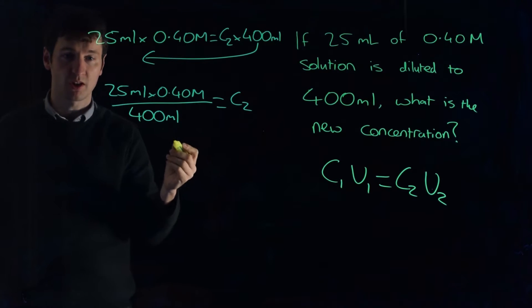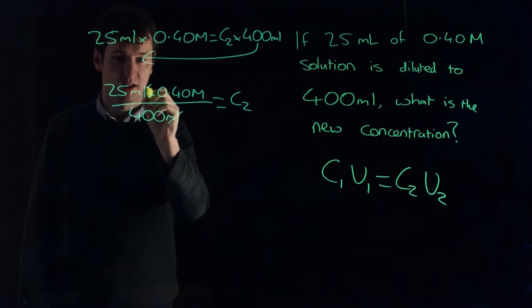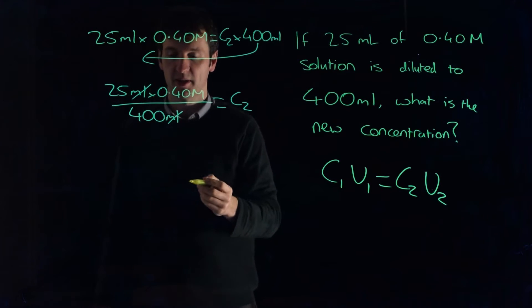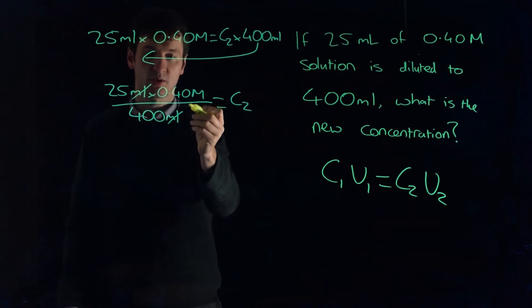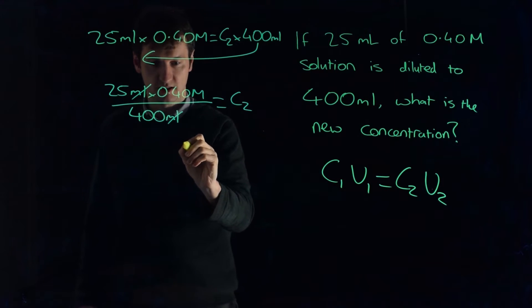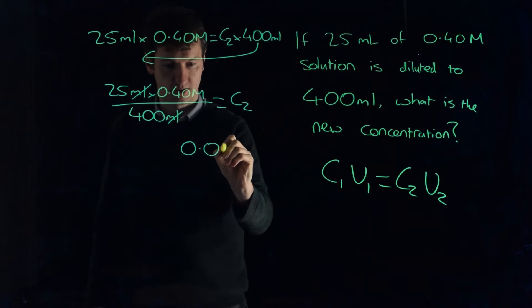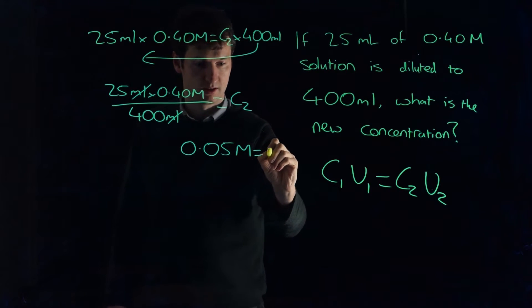To check we're going right, we can cancel our units out, and that makes sense. Now if we put this into our calculator, we get concentration 2 is equal to 0.05 molar.